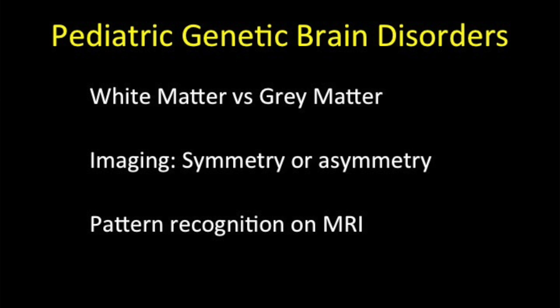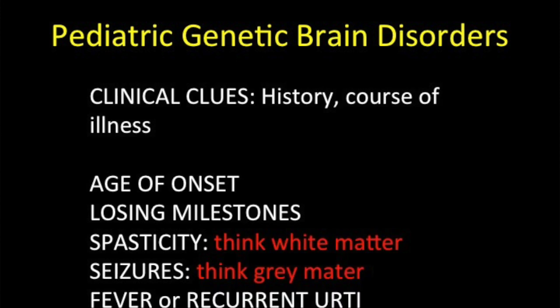Even before looking at imaging, check these questionnaires: What is the age of onset of symptoms? Is the child losing milestones, and if so, is neurological regression happening slowly or rapidly? Are there any non-CNS symptoms like upper respiratory tract infections? If the patient has presented with spasticity first, think about primary white matter disorders. If the child presented with seizures first, look for primary gray matter affection. If fever or upper respiratory tract infection has led to CNS symptoms, think about inherited mitochondrial disorders like MELAS, MERRF, etc.